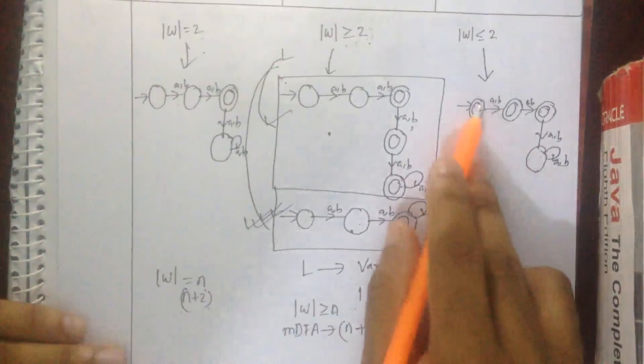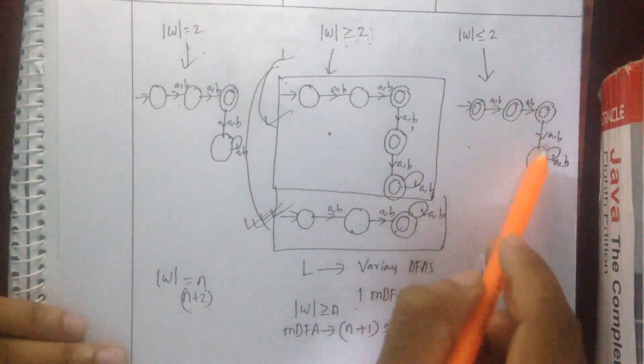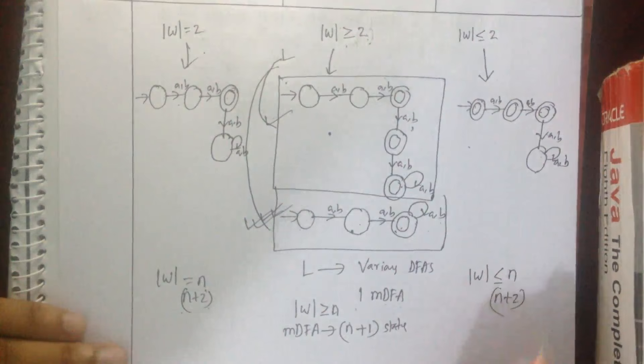আর যদি length of string n-এর সমান হয় তাহলে number of state হবে — দেখো এখান থেকে আমীরা কত কলো — এখান থেকে state page length হলে যে 4 page — আর n plus 2 হবে।